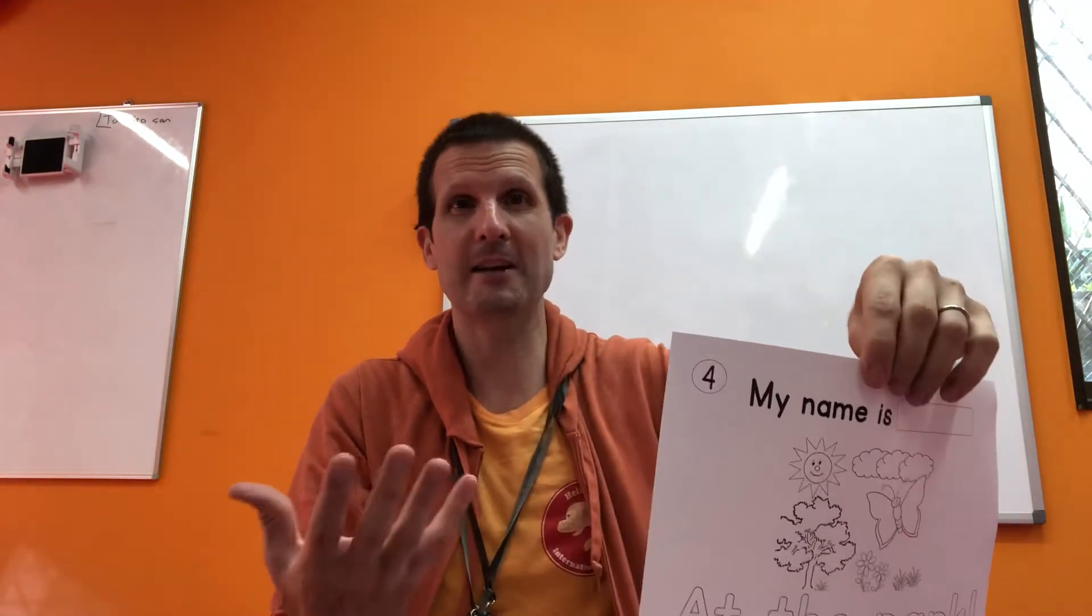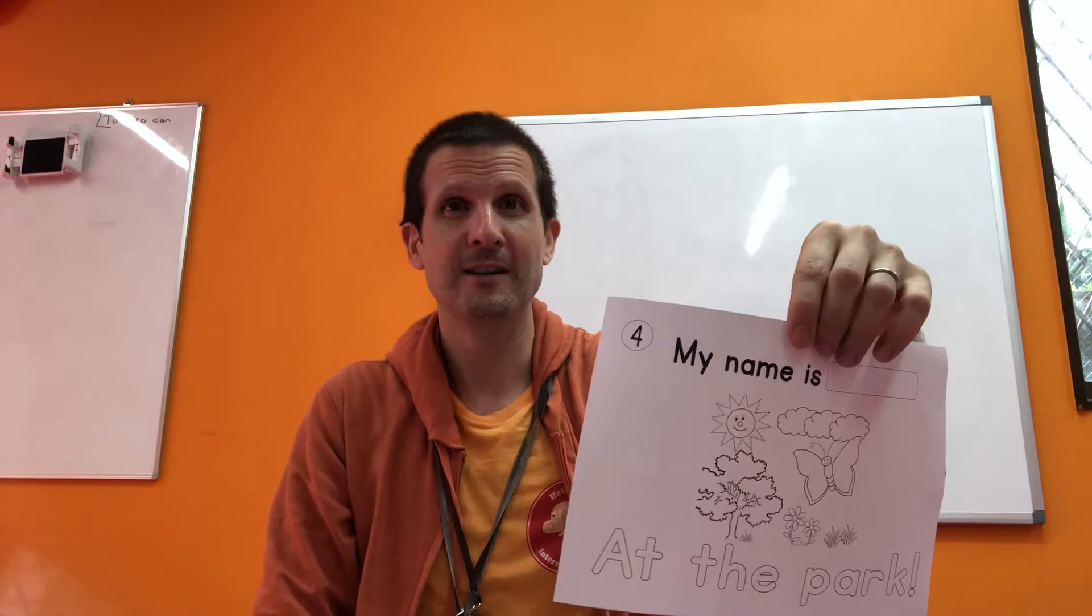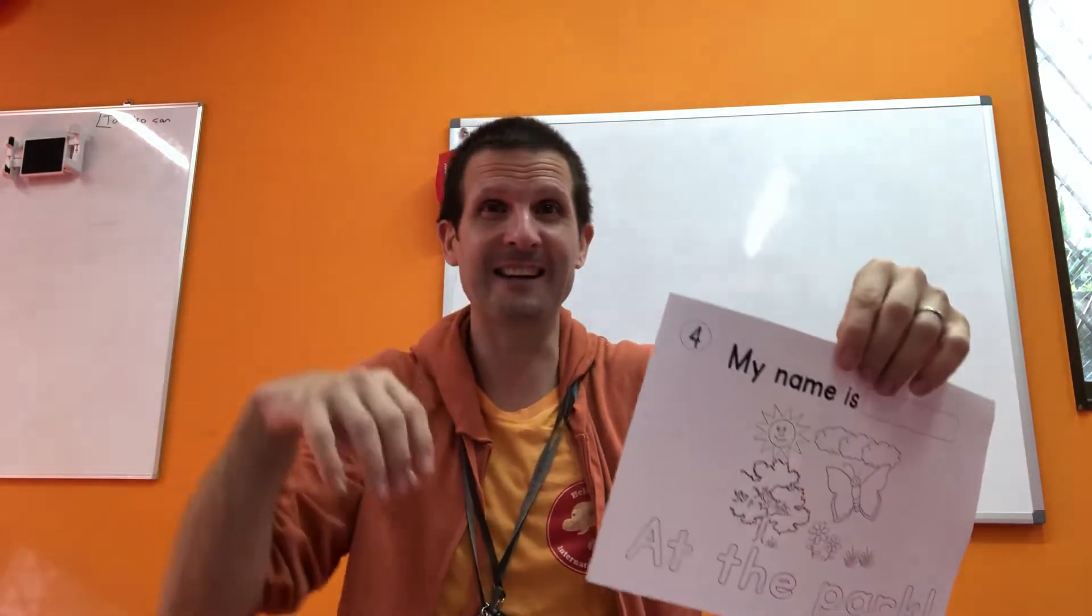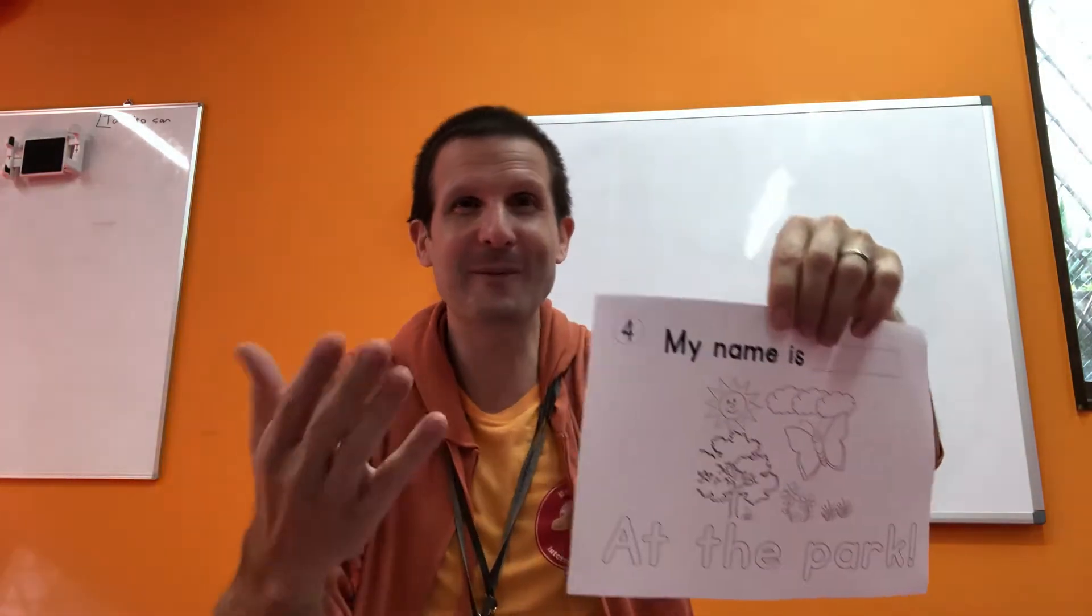I think Mariko wants to build like a kind of palace or something. Get the cups out there and maybe like a spoon to carve out. Make some windows.